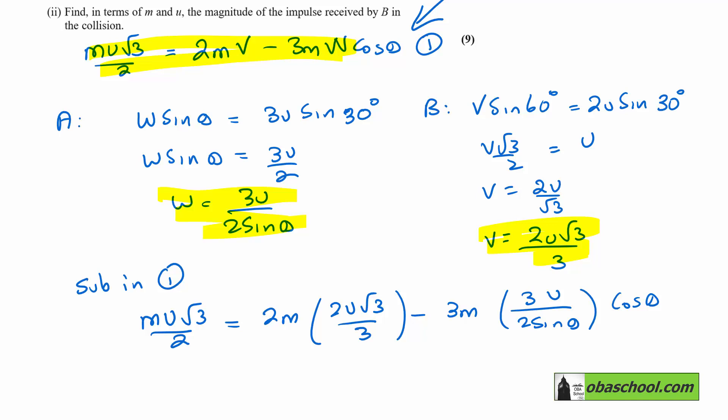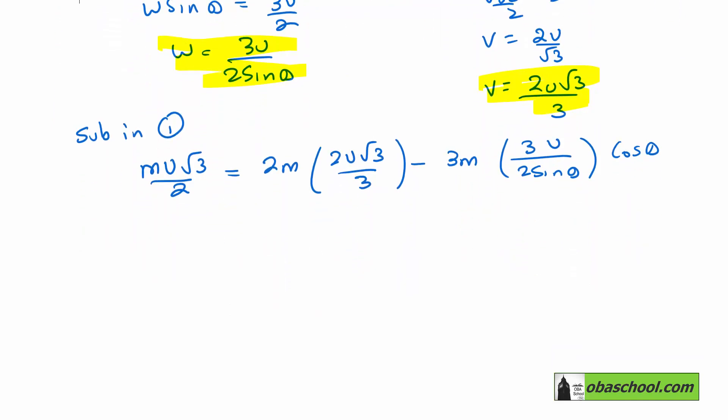And now we just need to do some algebra. So I think we can cancel M's and U's throughout. So let's do that just to simplify what we're writing down each time. And then we get root 3 on 2 is 4 root 3 on 3. Take away 9 over 2 and cos theta over sin theta is cot theta.